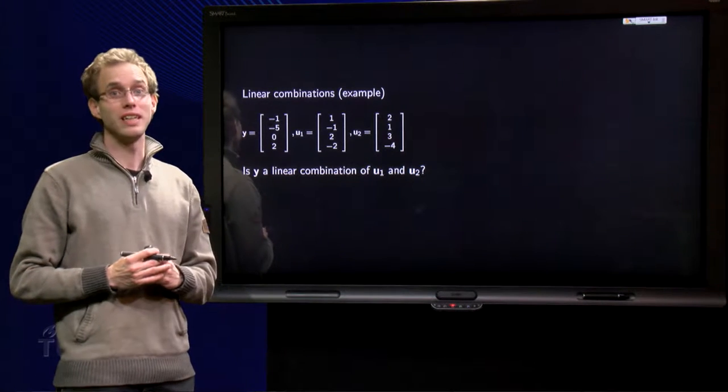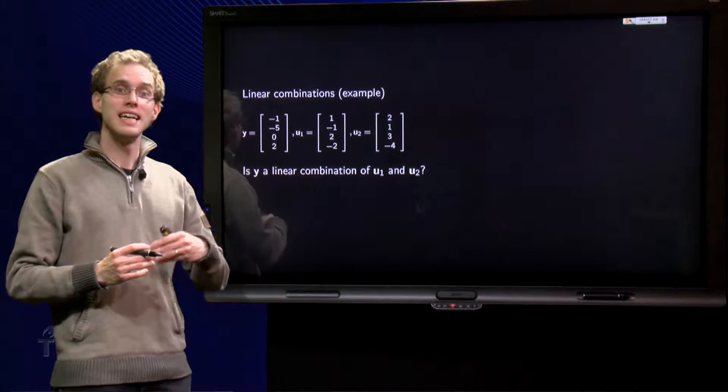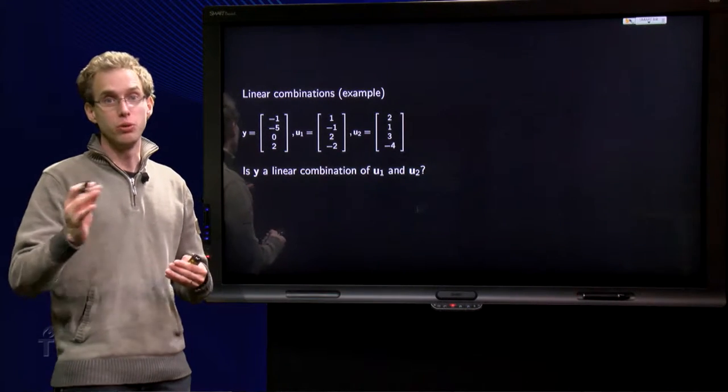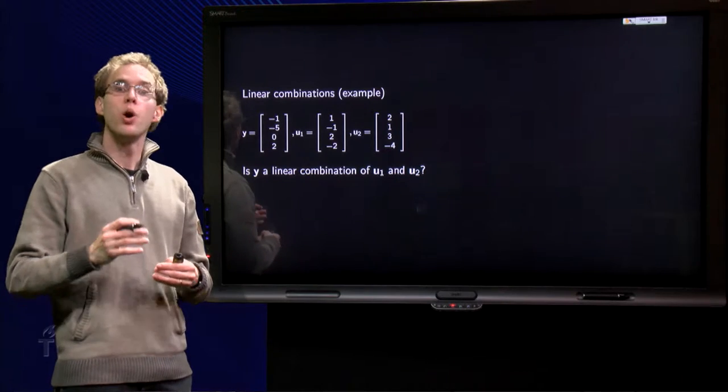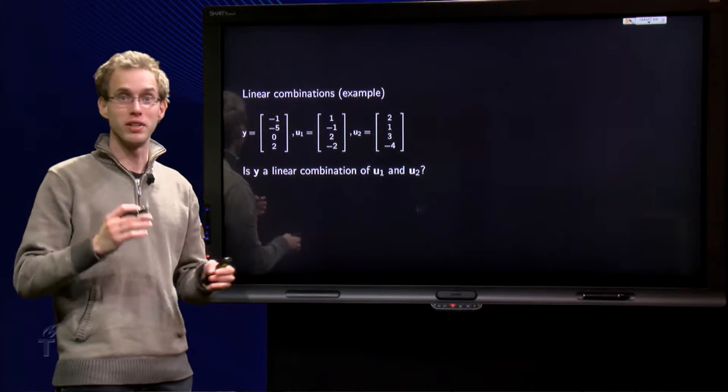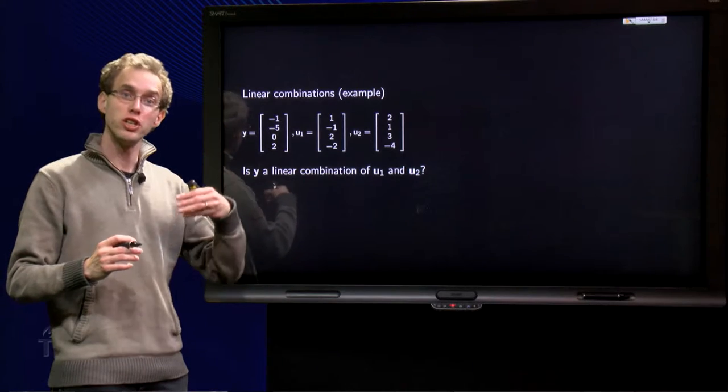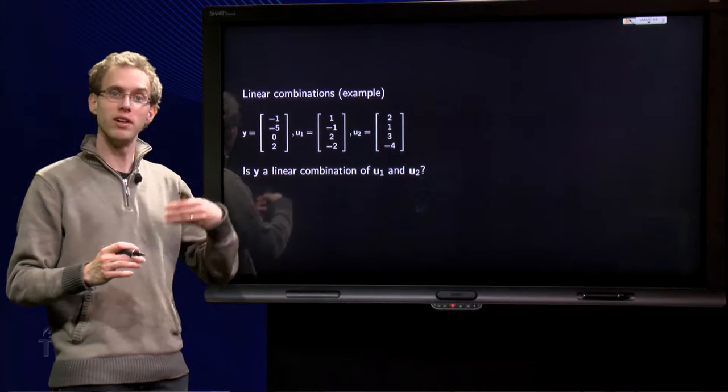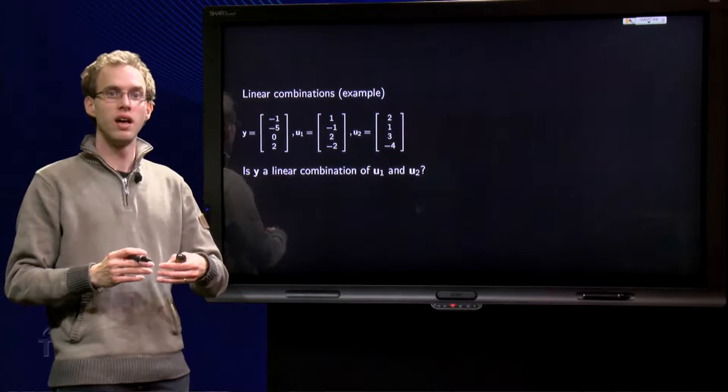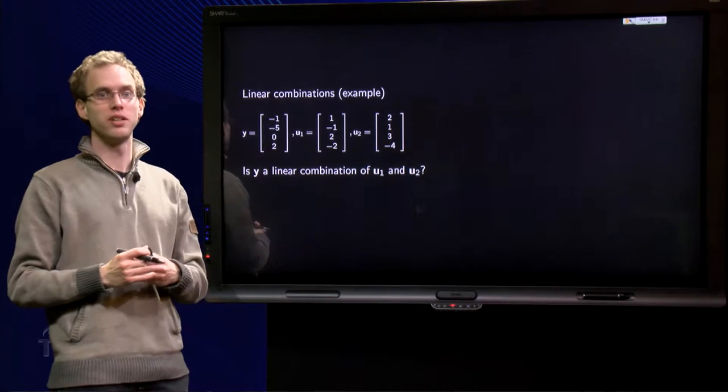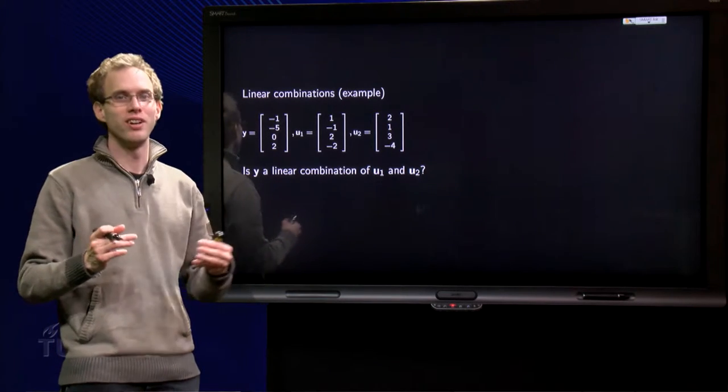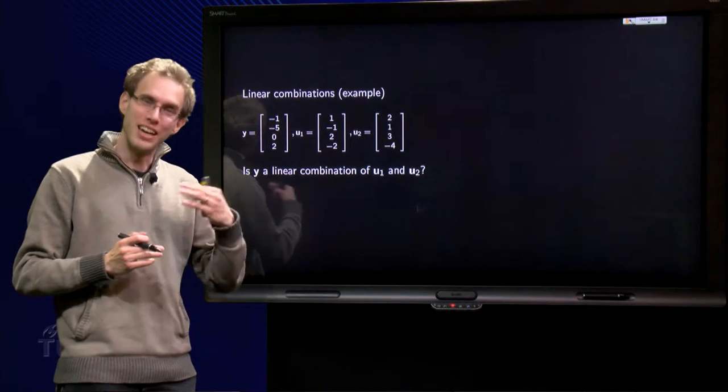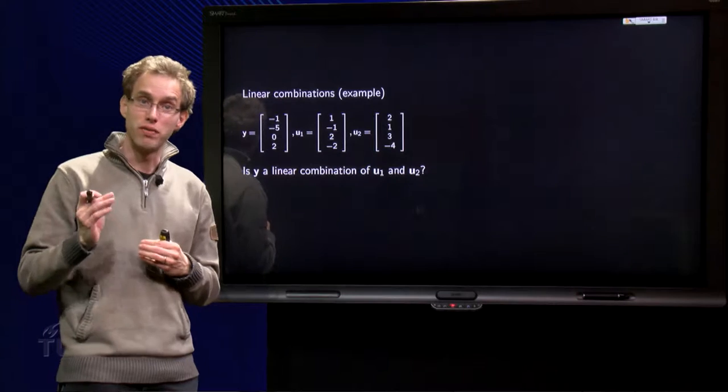You know that the vector y is a linear combination of some other vectors, say u1, u2 and u3, whenever you can find the weights such that y equals c1 u1 plus c2 u2 plus c3 u3. But how are we going to find these weights? By trial and error? Well, that does not seem a very bright idea. In this video you will learn how to find these weights very fast.